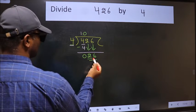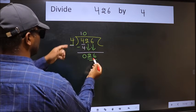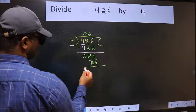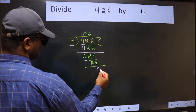Now 26. A number close to 26 in the 4 table is 4×6=24. Now we should subtract. We get 2.